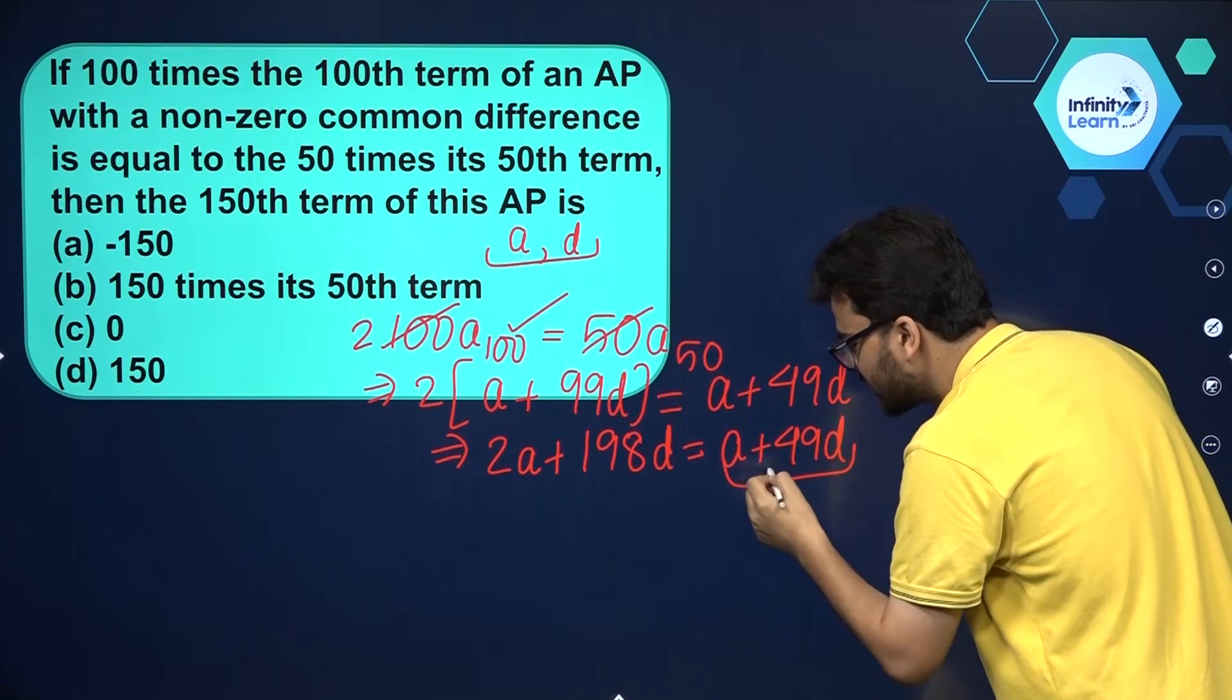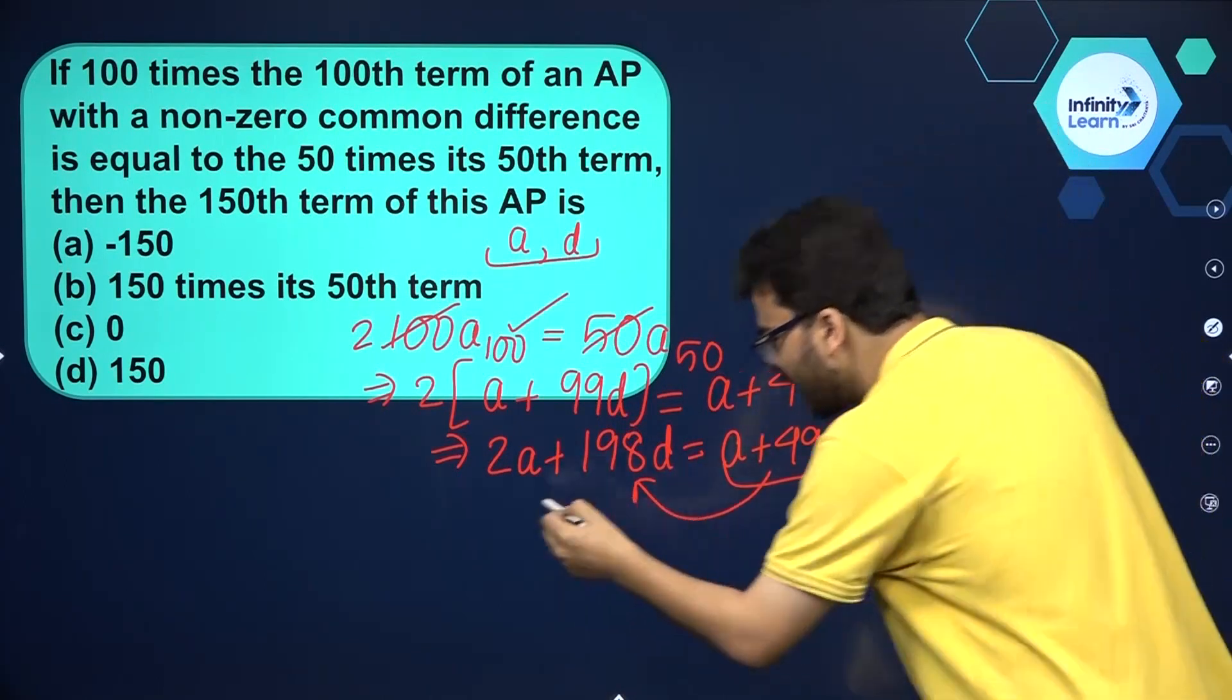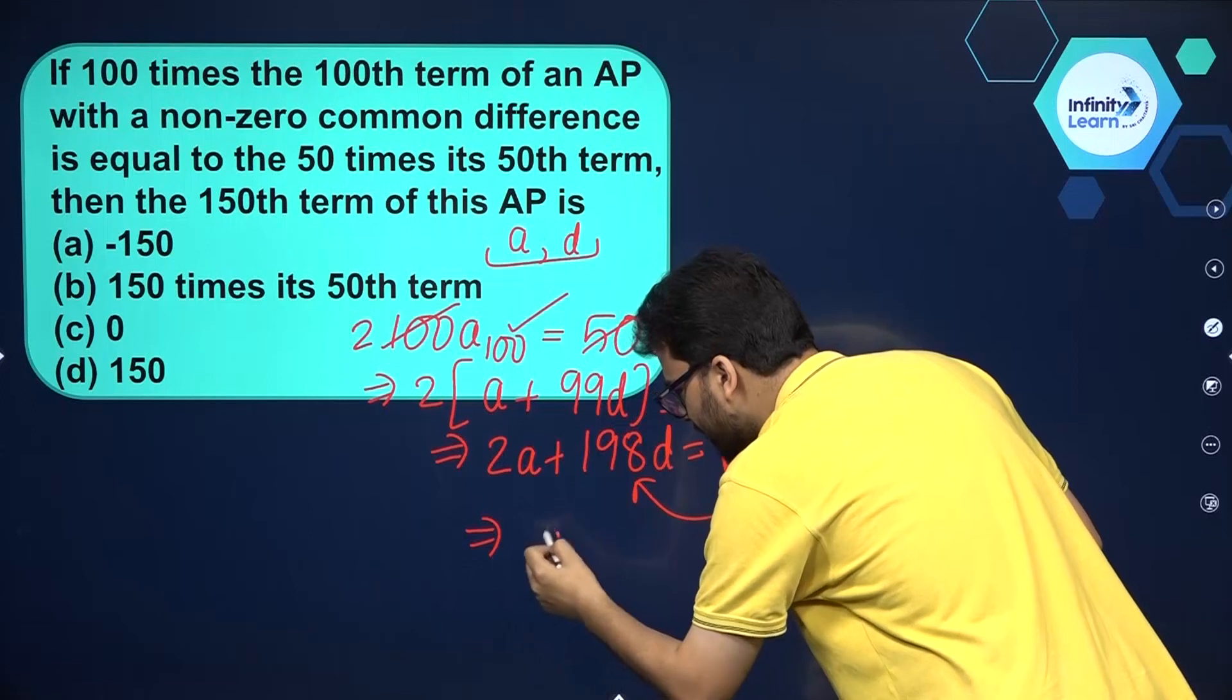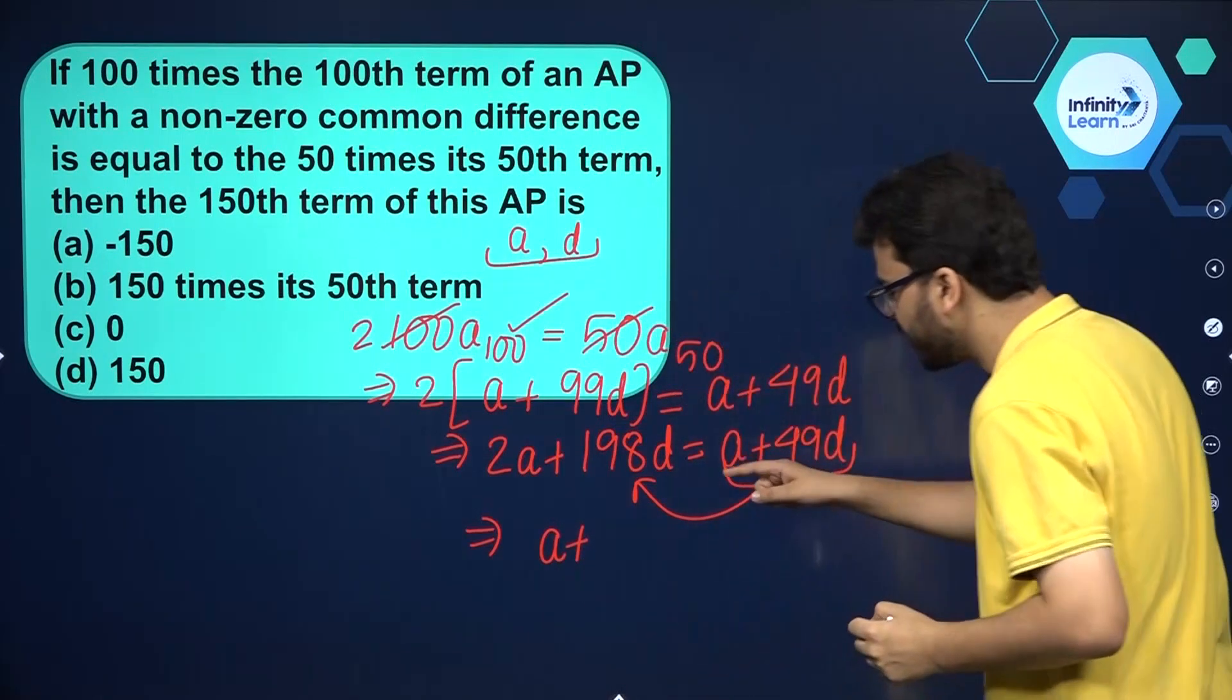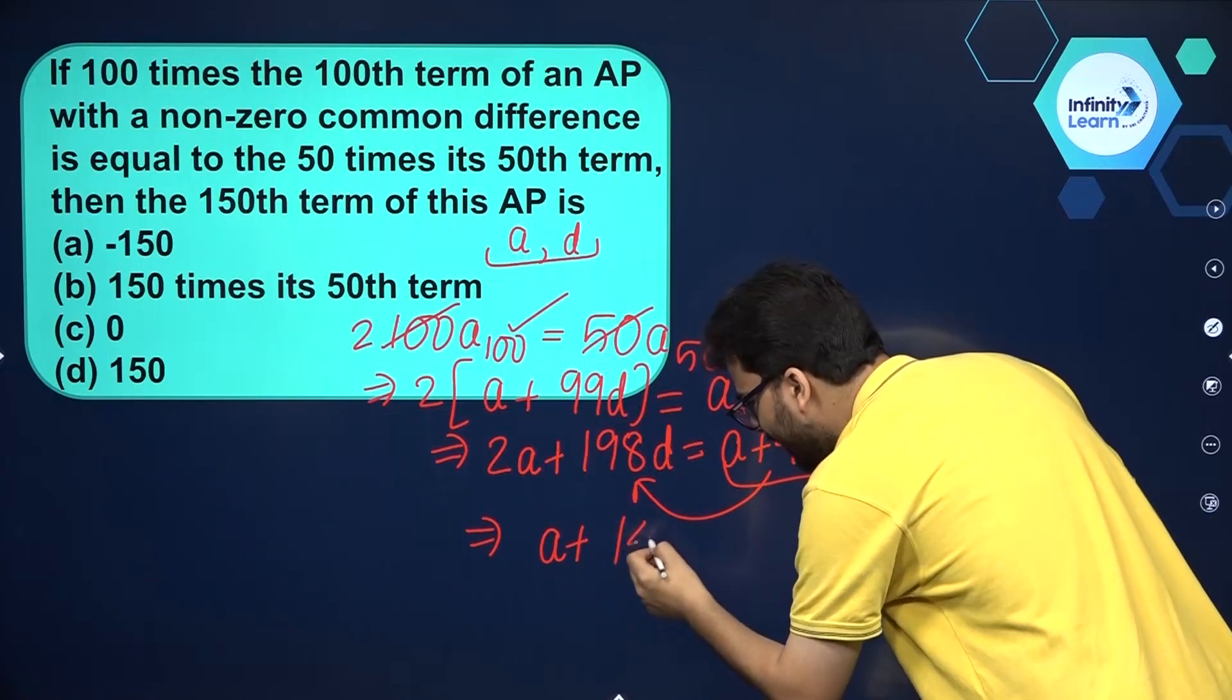Now if I take these things on the other side of this equation and subtract, what will I get? I will get A plus 149D.